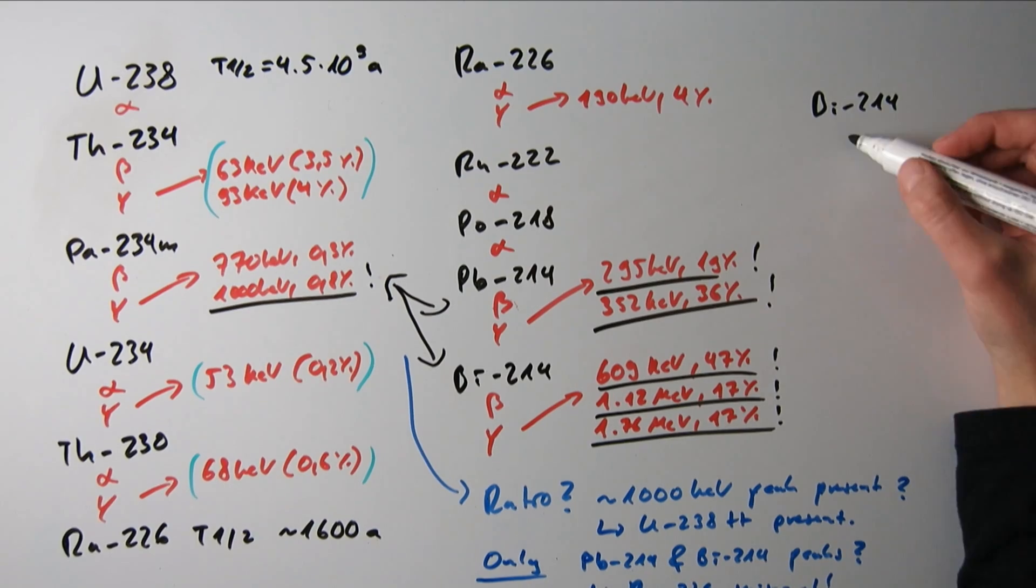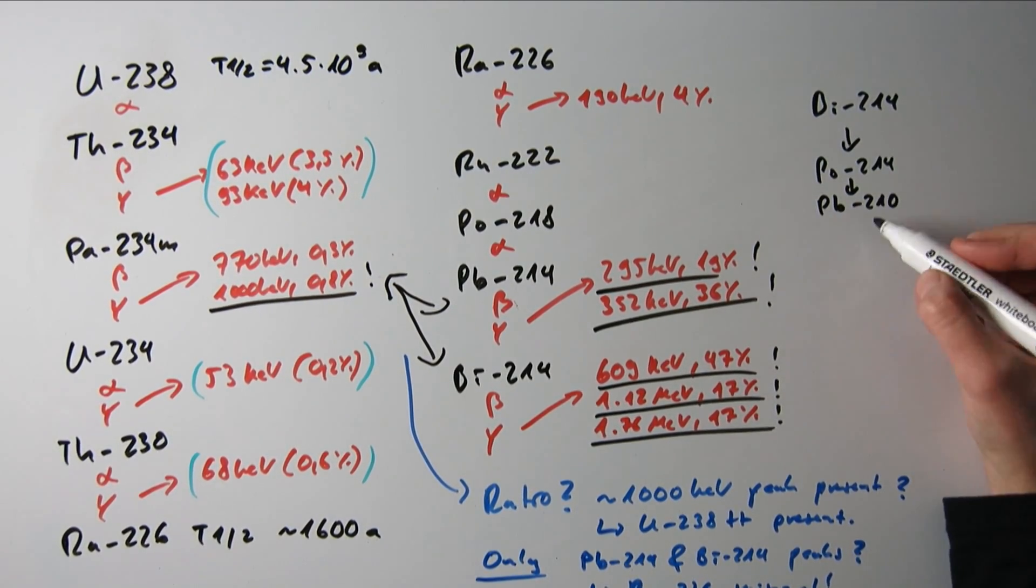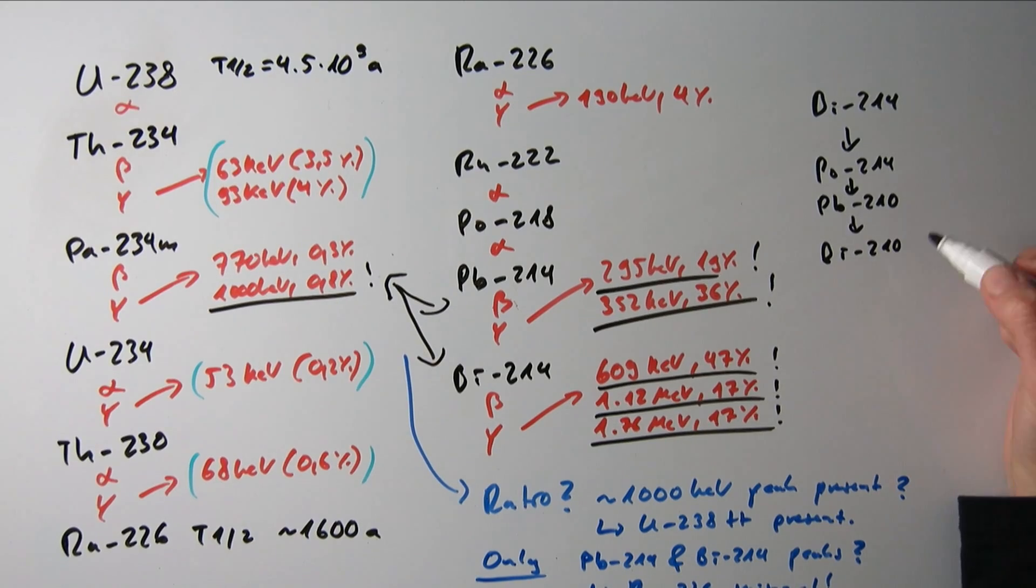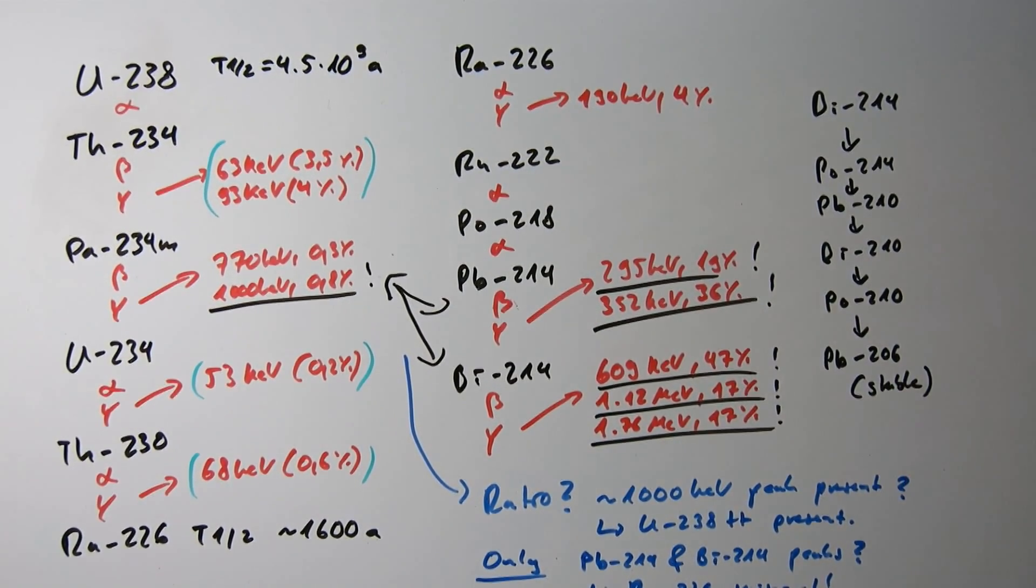And just in case you're wondering what uranium will finally become, here's the rest of the decay chain, even though not important for our experiment, and you can see in the end uranium will become stable lead, the very material that we use to shield radiation.